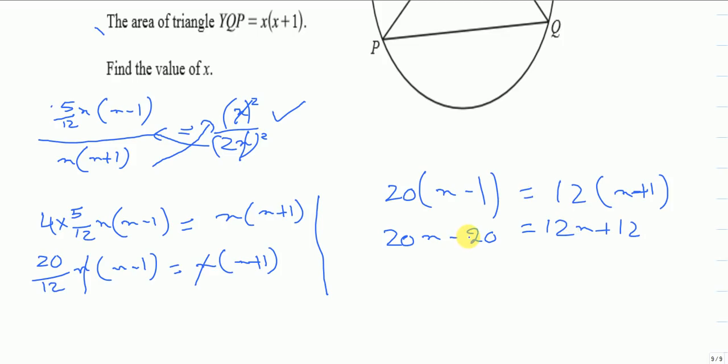I'm going to take 12x on the left hand side and 20 on the right hand side. So it will be 20x - 12x equals 12 + 20. Finally it will be 8x equals 32.